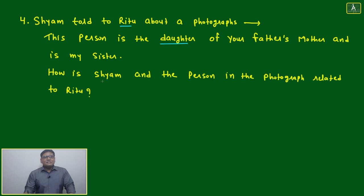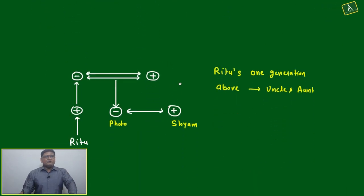How is Shyam and the person in the photograph related to Ritu? One thing is sure - it is father's mother. Father's mother means three generations we are dealing with. Three generations we are dealing with, then a tree diagram we have to make in a similar way.